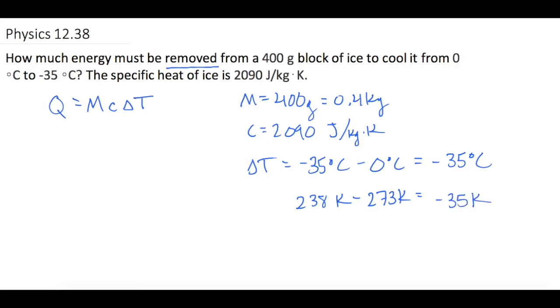So now when we plug it in, Q is equal to 0.4 times the specific heat, 2090 joules per kilogram K, times the change in temperature, which is negative 35.